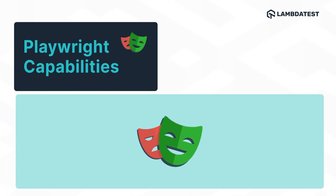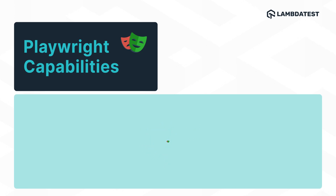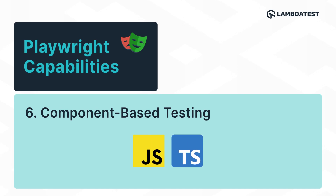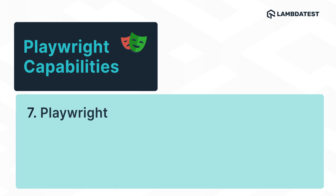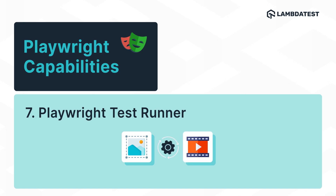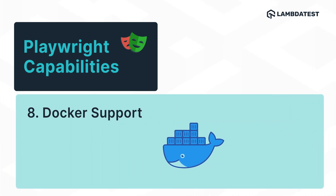In the recent version of Playwright, that is 1.22, we have component-based testing as well. The beauty of Playwright with TypeScript or JavaScript is that it has its own test runner called the Playwright Test Runner, which is really good. If you want to take a screenshot or a video recording, just a single configuration and it will work across all the scripts. It also supports Docker as well.